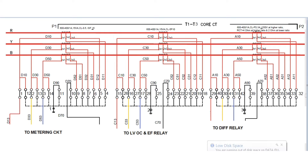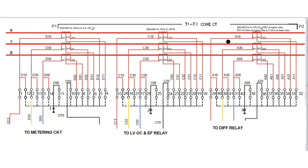This is the primary side. There are three number of cores. One is the metering core, designated as D ferrule. One is the core taken for the overcurrent and earth fault relay, designated as C ferrule. And another core taken for the differential relay, designated as A ferrule.